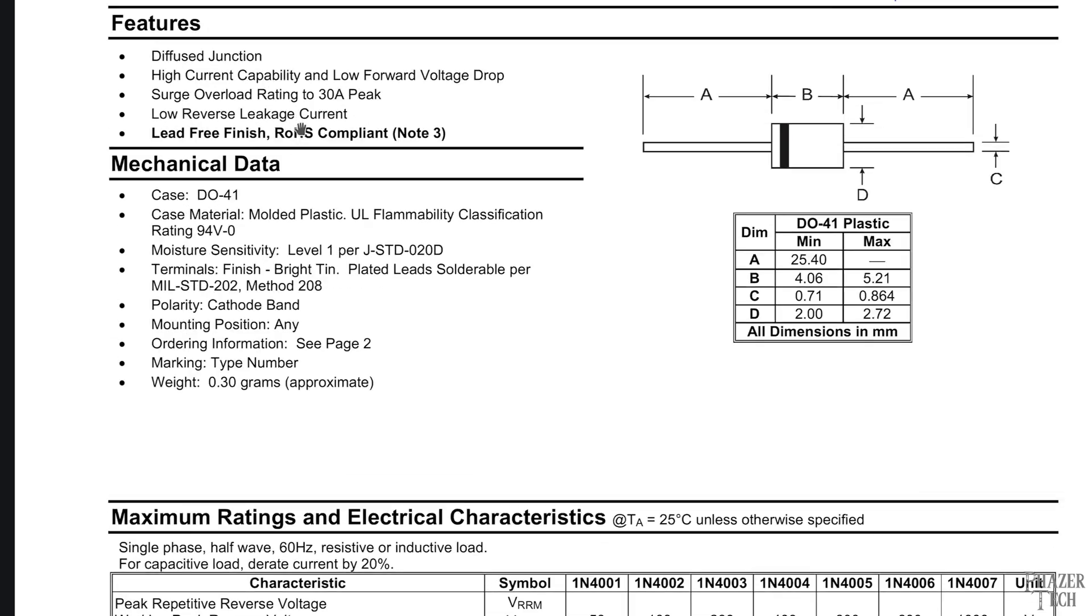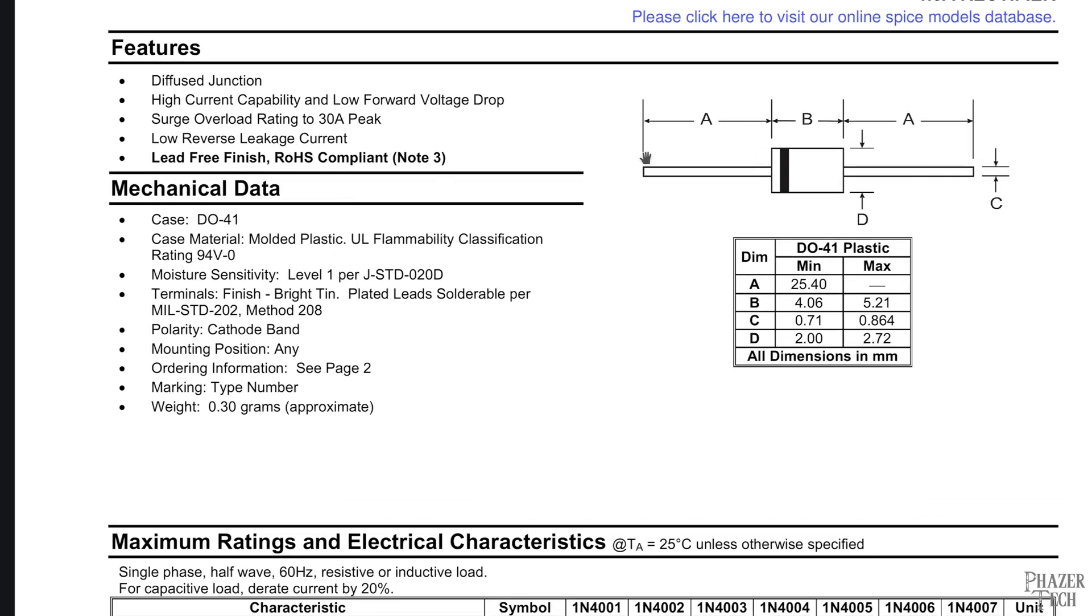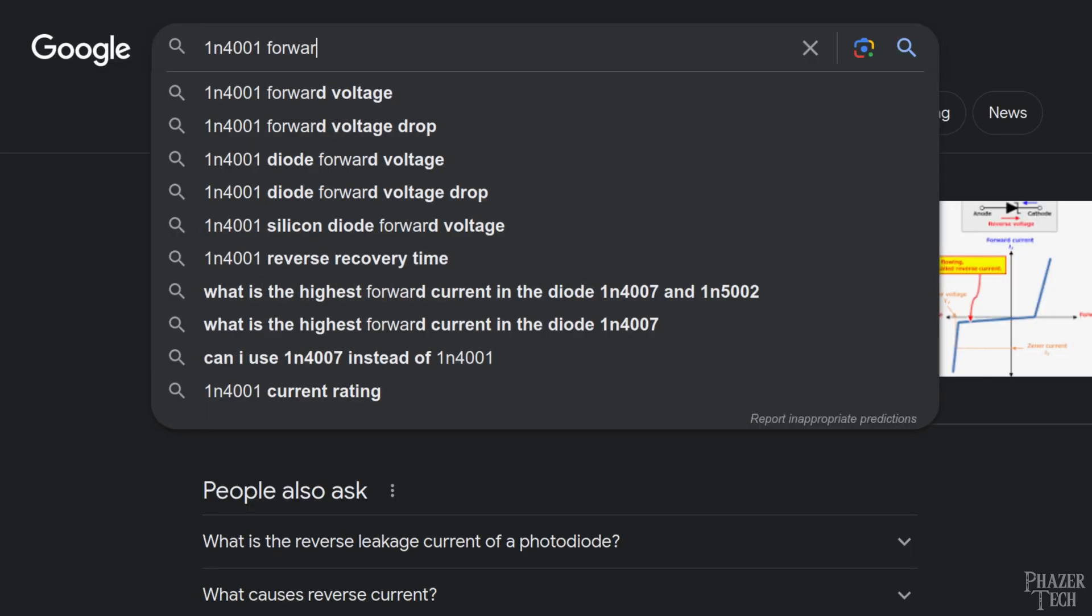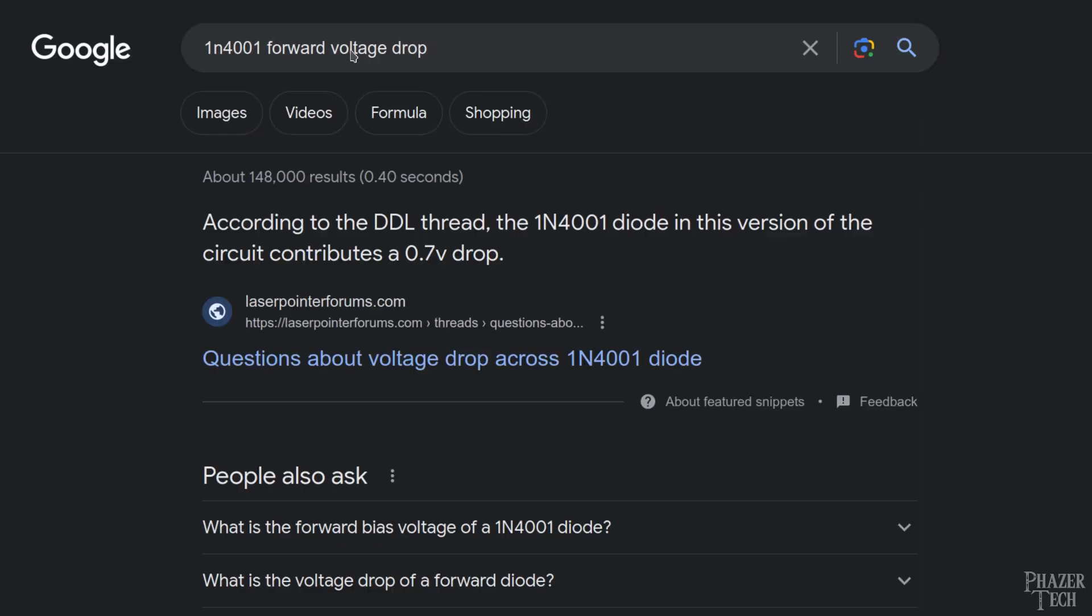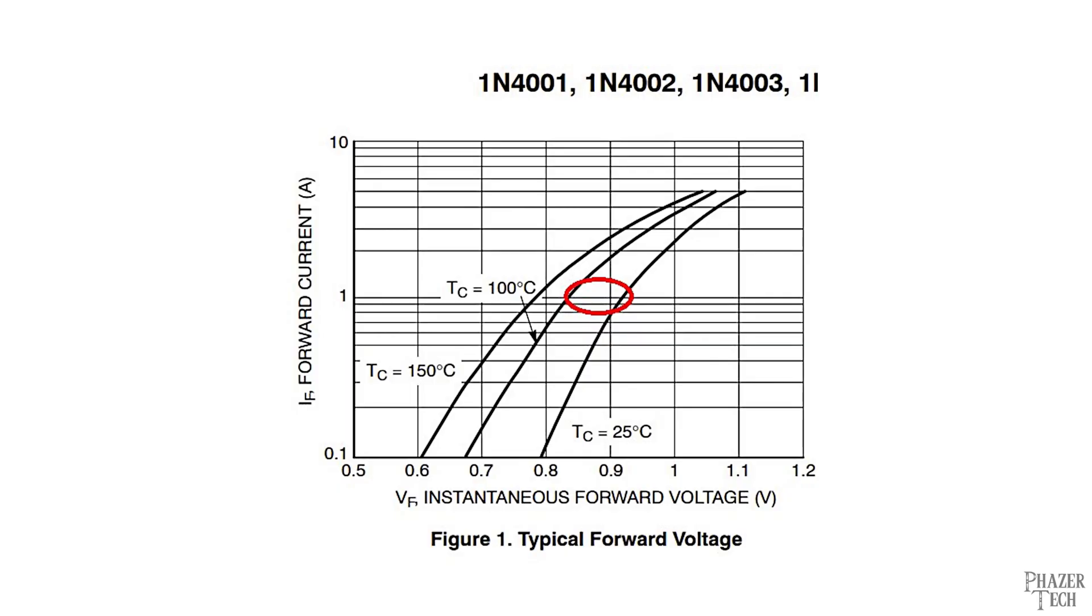There will also be a forward voltage drop as well. This particular datasheet doesn't give the exact voltage drop, instead it simply says low forward voltage drop. We can find out the actual voltage drop by googling it, and according to this, these diodes have a drop of roughly 0.7 volts. So if you applied 5 volts in the forward direction, there would be a 0.7 voltage drop across the diode, leaving only 4.3 volts available for the circuit.